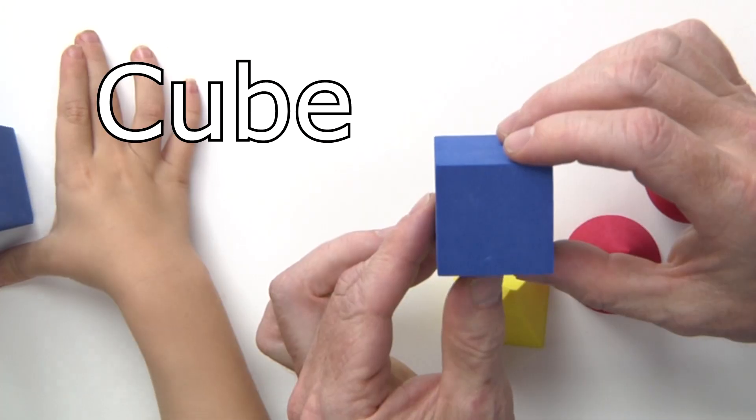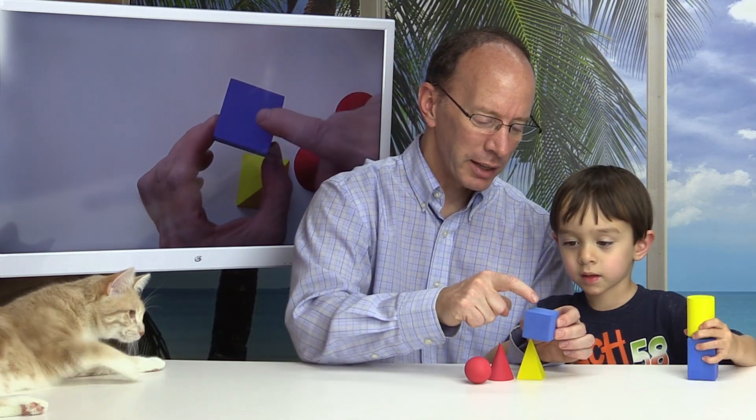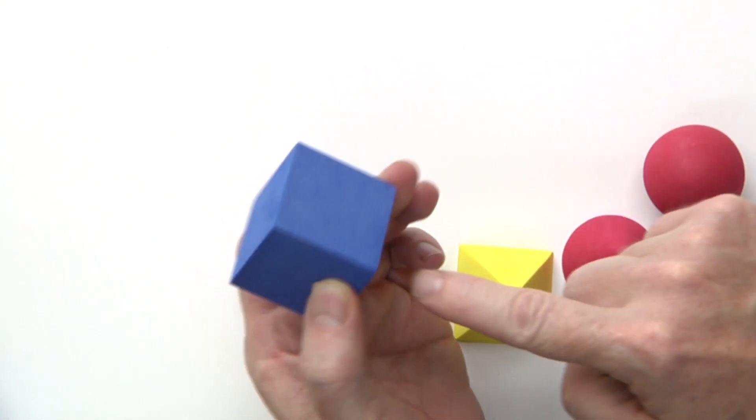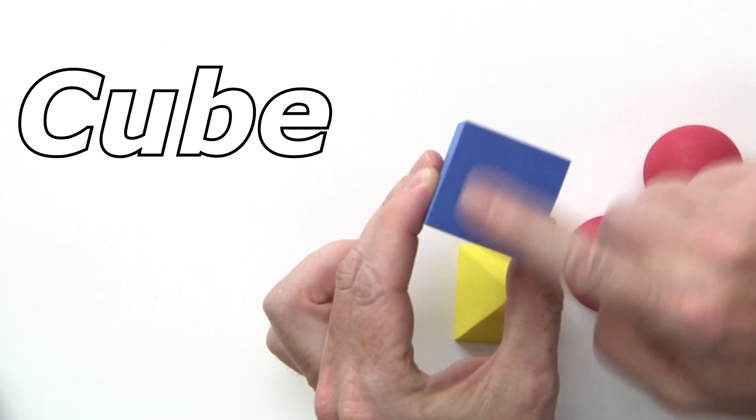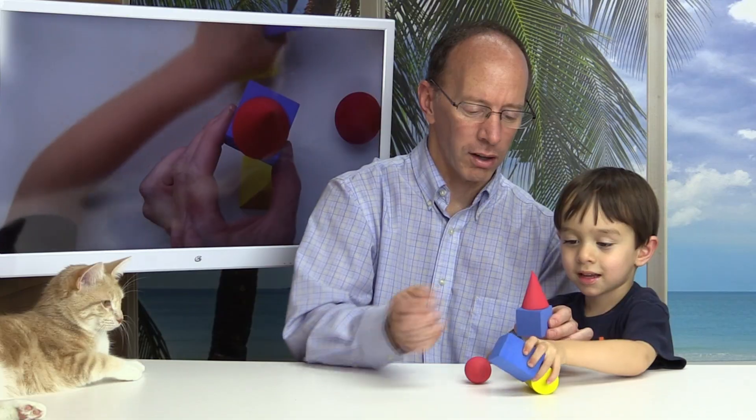Do you know what this is right here? This is a cube. Do you know how many faces are on a cube? Let's count them. There are 1, 2, 3, 4, 5, 6 faces. A face is a flat side of a shape. So if you put something on it, it won't fall off.